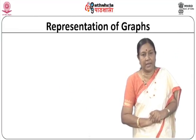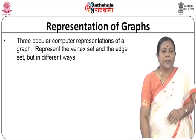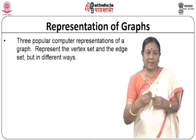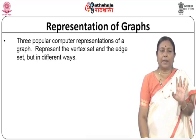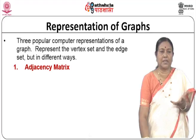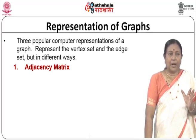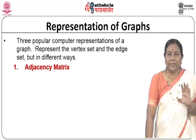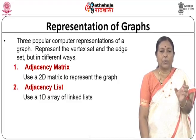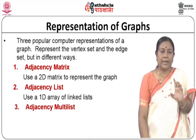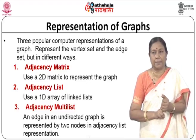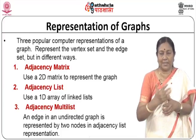There are three popular computer representations of graphs, though two are major ones. We need to represent the vertex set and edge set. First is the adjacency matrix, a very commonly used representation using a 2D matrix. Second is the adjacency list, using a 1D array of linked lists. Third is the adjacency multilist, where an edge in an undirected graph is represented by two nodes in the adjacency list. We will discuss adjacency matrix and adjacency list in detail.